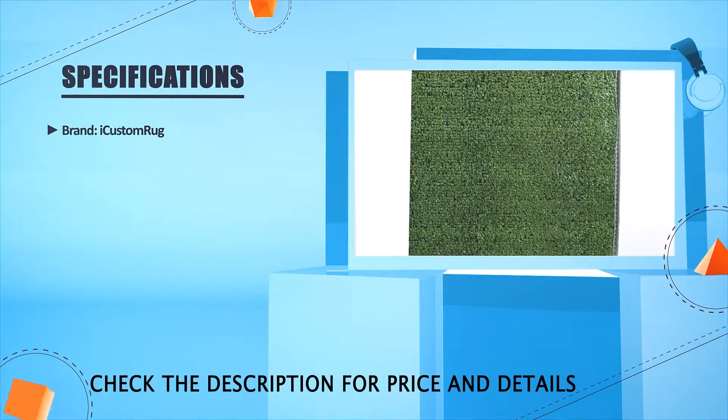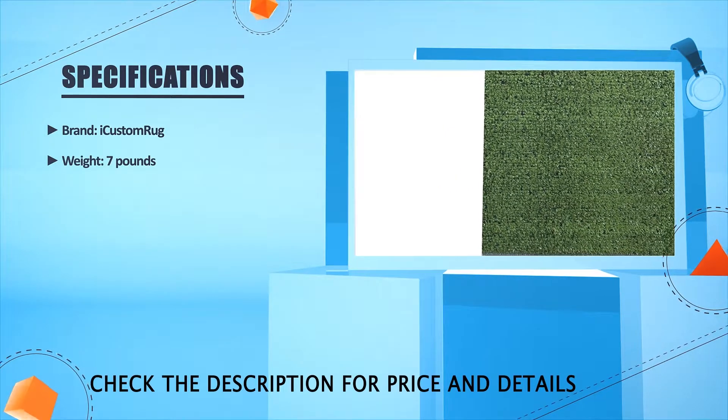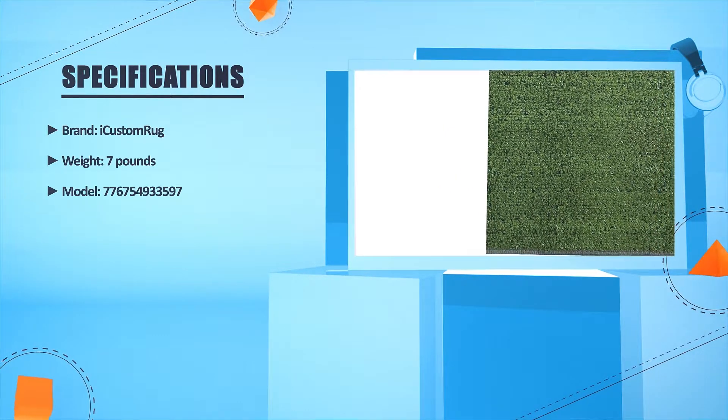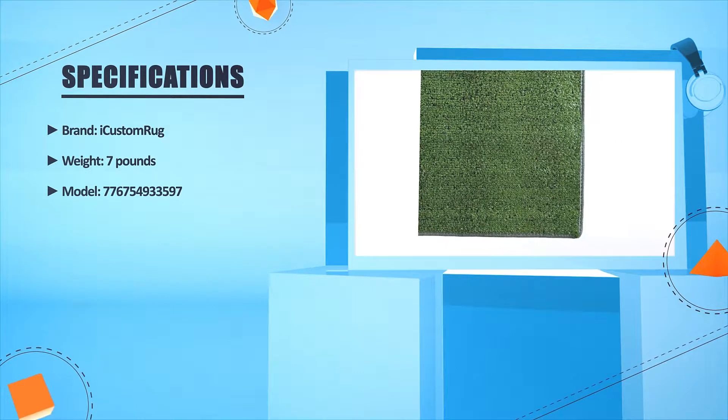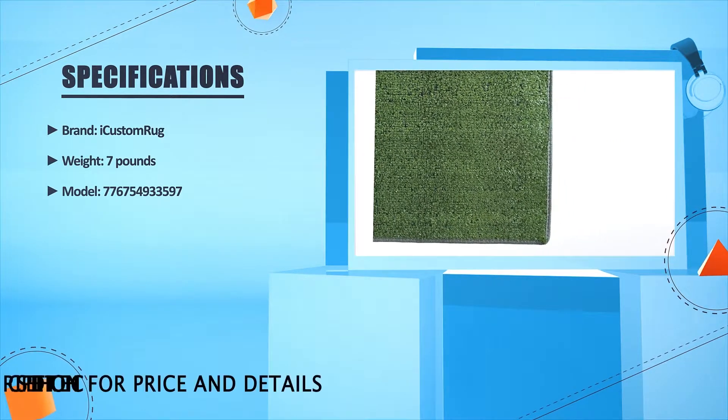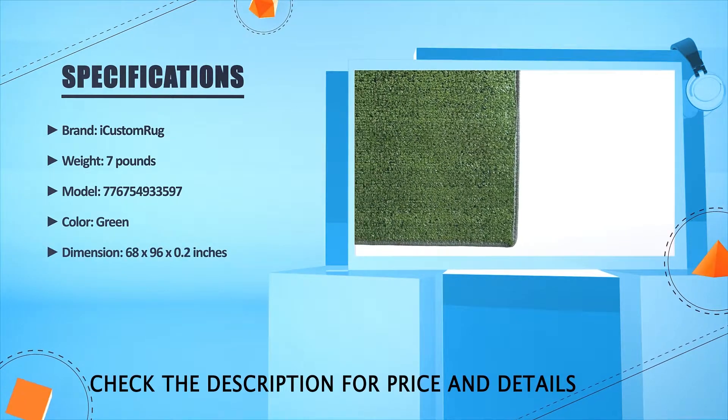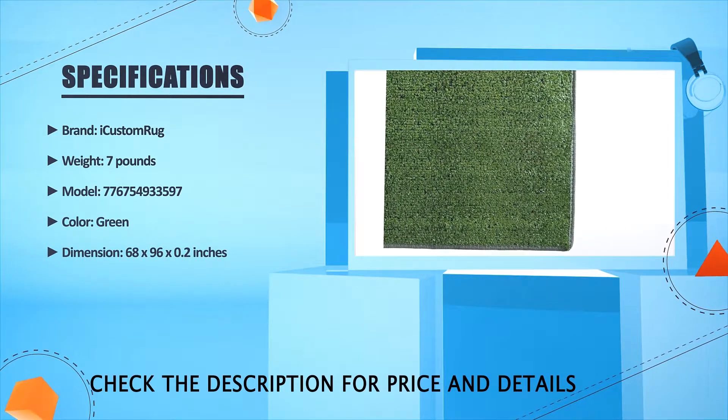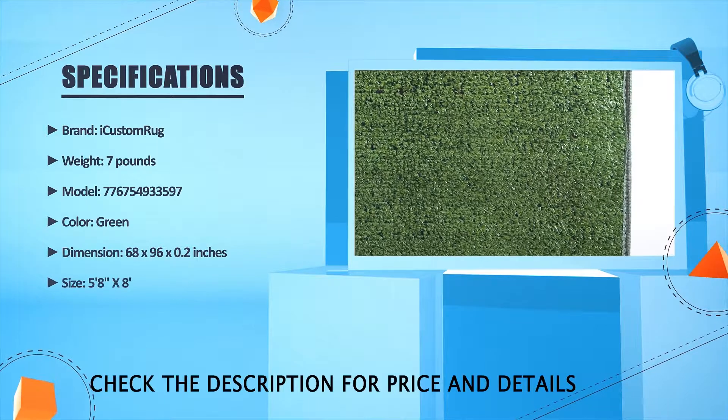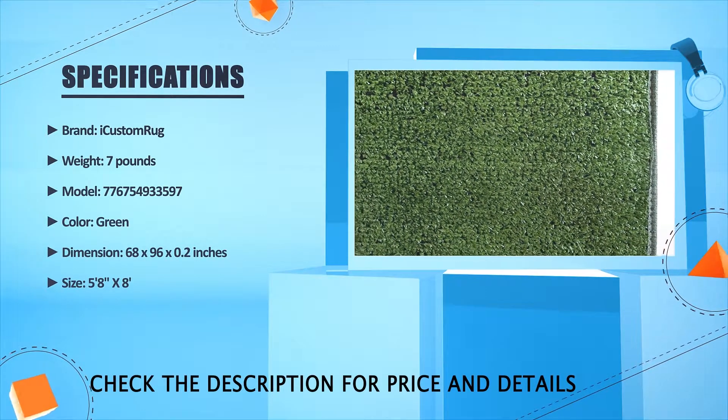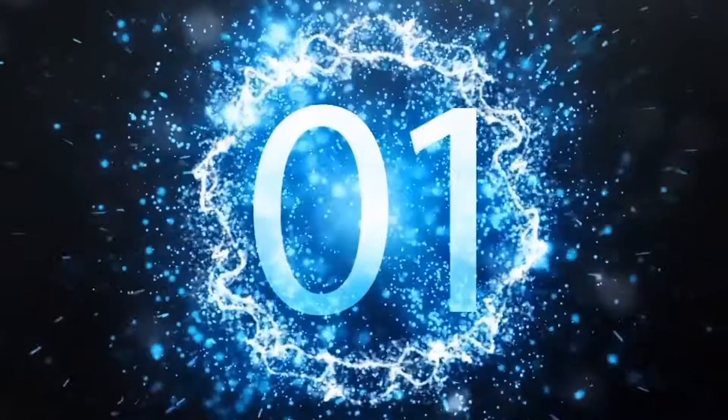Brand: iCustom Rug. Weight: 7 pounds. Color: Green. Dimension: 68 by 96 by 0.2 inches. Size: 5 feet 8 inches by 8 feet.